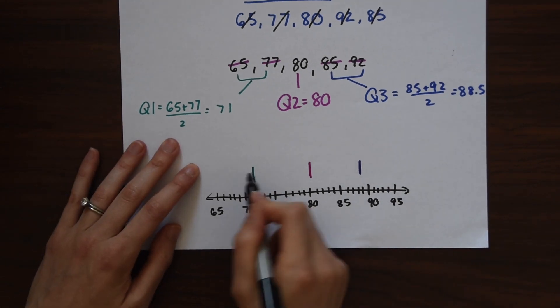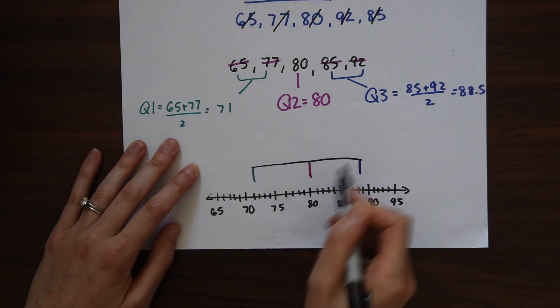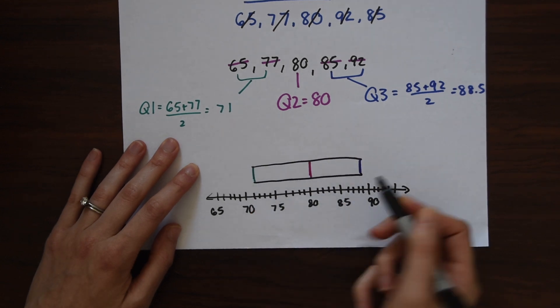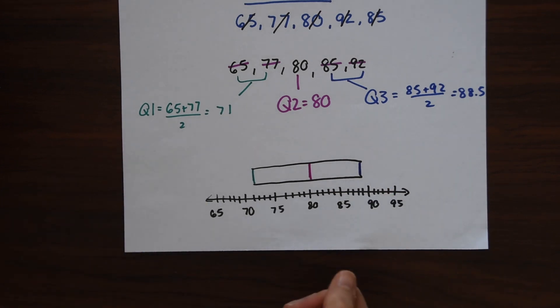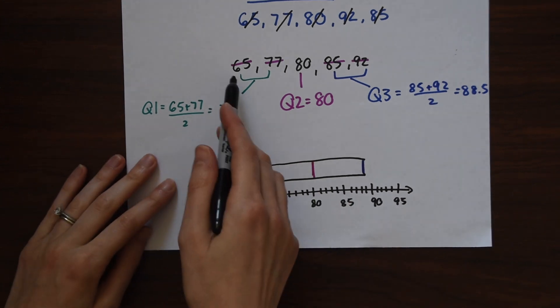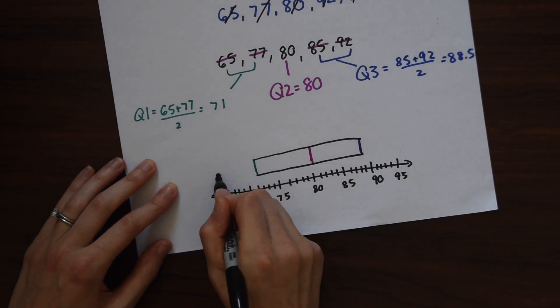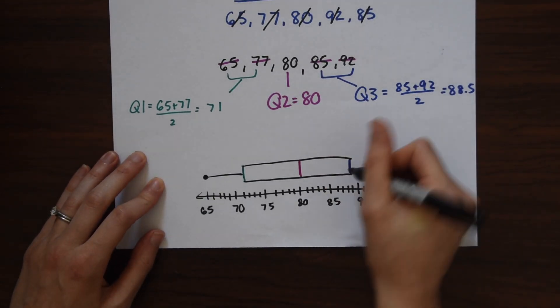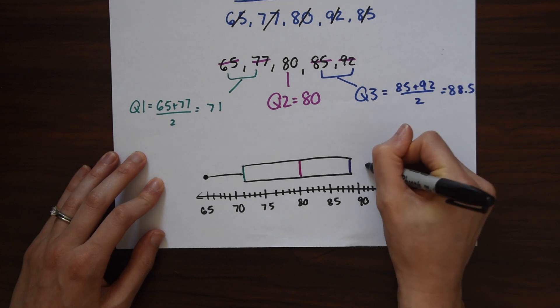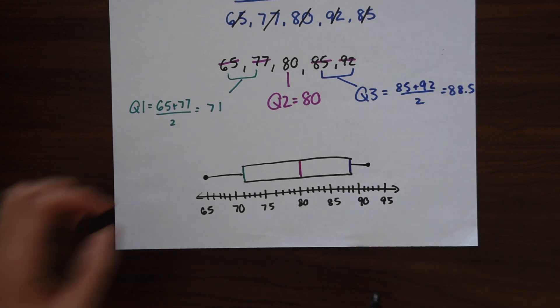Now we can just connect all of our lines together making a box. So that's our box plot. But we also need to mark where the minimum and the maximum are. So the minimum of our data is at 65. We're going to make a dot and just connect this into our box. And then our maximum is at 92. So our highest number of data is 92. So that's right here on our number line. So we're just going to mark it and draw a line.